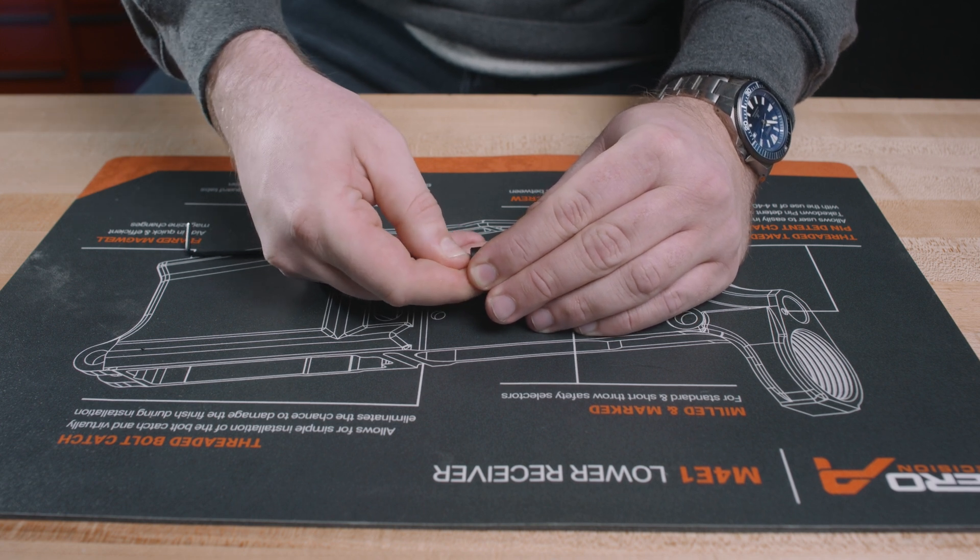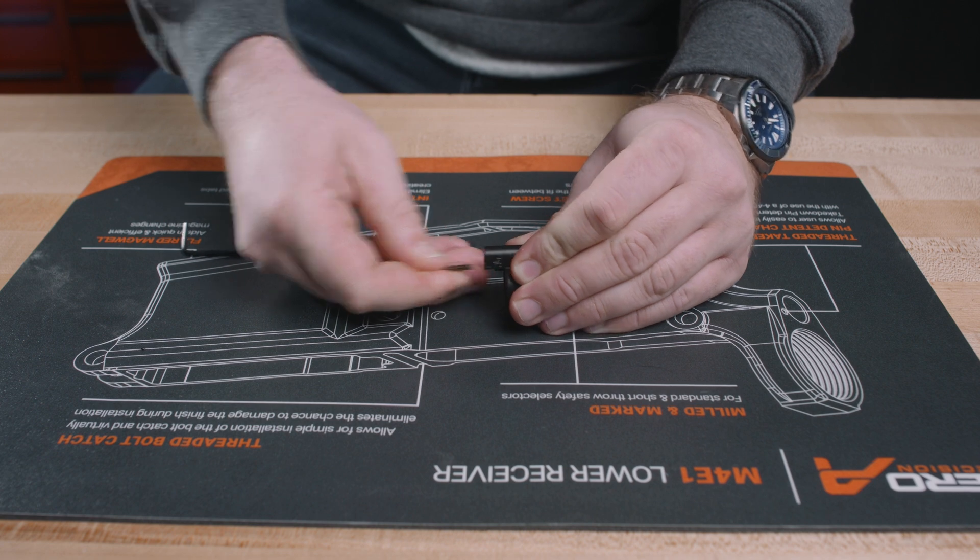So we get that backed out all the way and then we should be able to just pull. That'll pop right on out and you got to be careful here because your detent and spring are going to want to go all over the place.